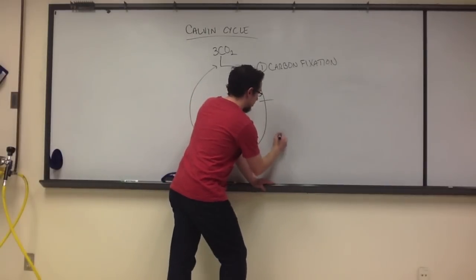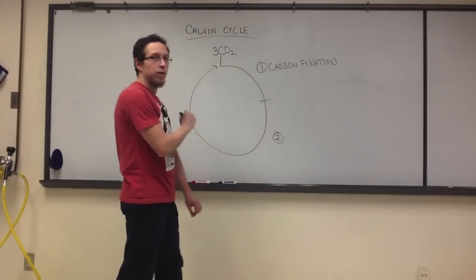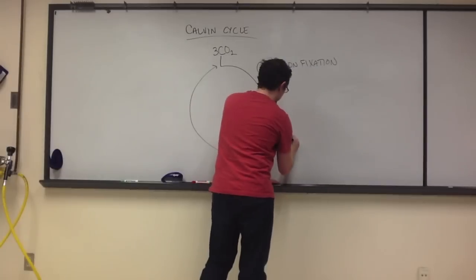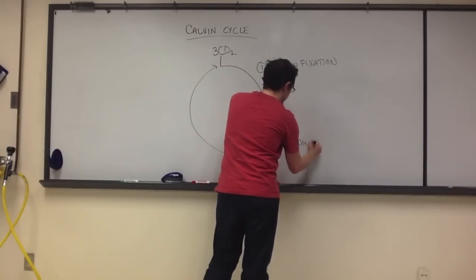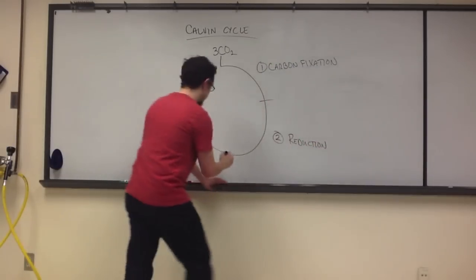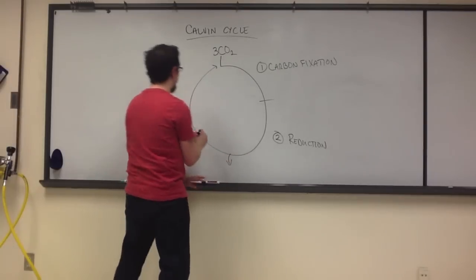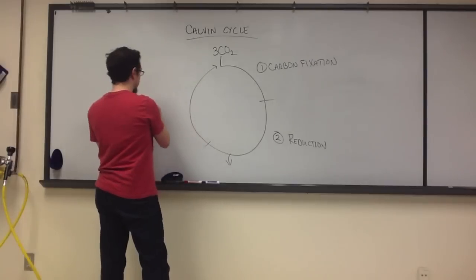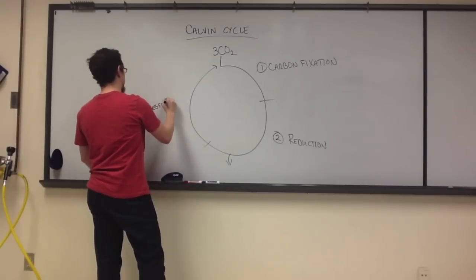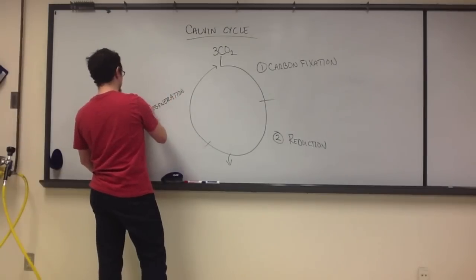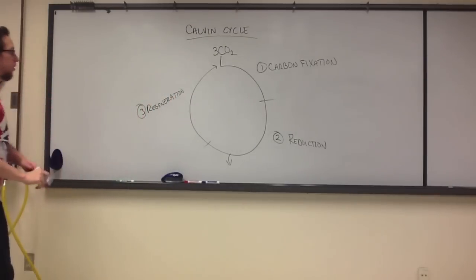Shortly after that, the molecules produced from the intermediates are reduced. There is an output from the cycle, and then following that, we have what is known as regeneration, wherein we regenerate the initial molecule that started our cycle.